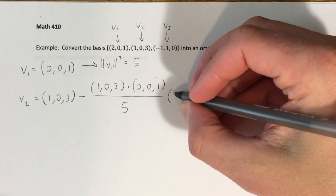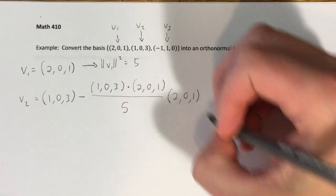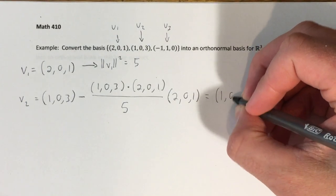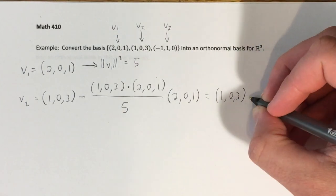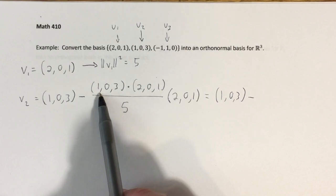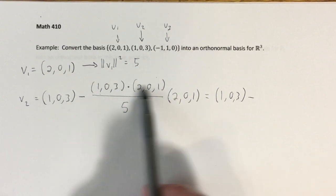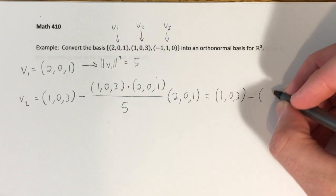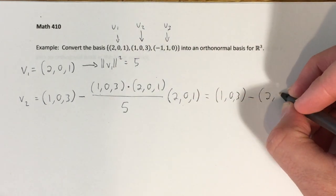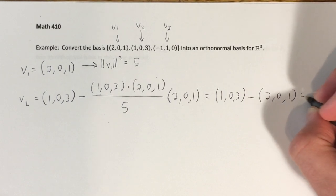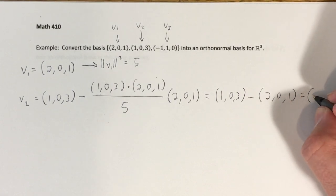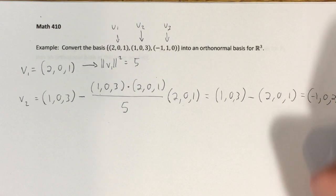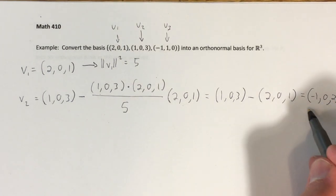So we have (1, 0, 3) minus this dot product — that becomes 2 plus 3, which is 5 — so we get 5 over 5, which is 1. Then 1 times the vector (2, 0, 1) is just (2, 0, 1). So after all this, we end up with V2 = (-1, 0, 2).